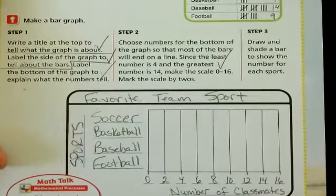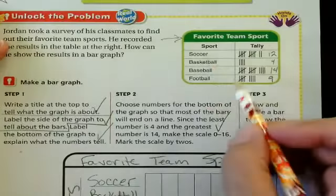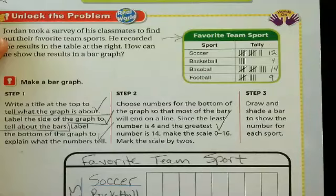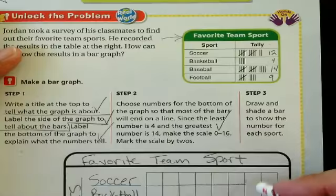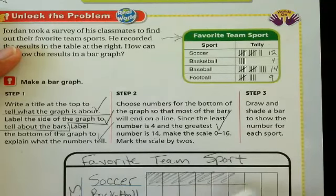Okay. Draw and shade a bar to show the number for each sport. So let's go with soccer first. How many did soccer have? 10, 11, 12. Soccer had 12. So right here is my 12 line. So I could go all the way to 12. This is my soccer line. Okay.